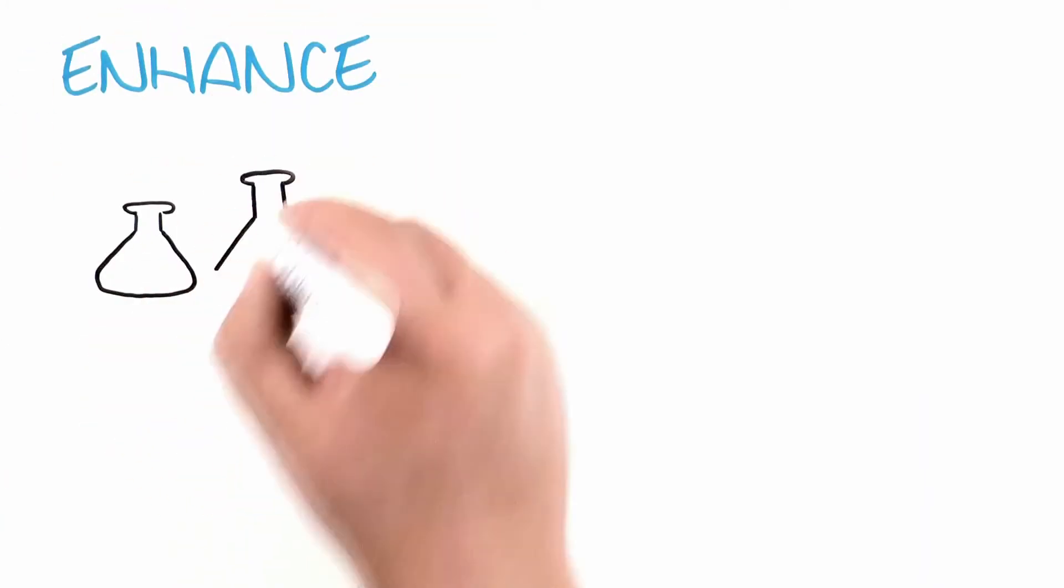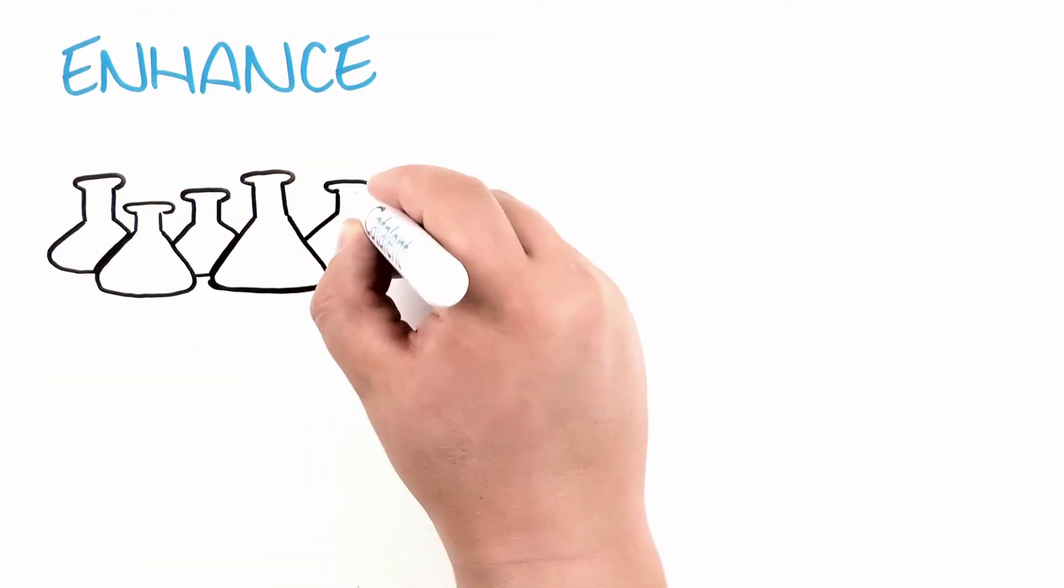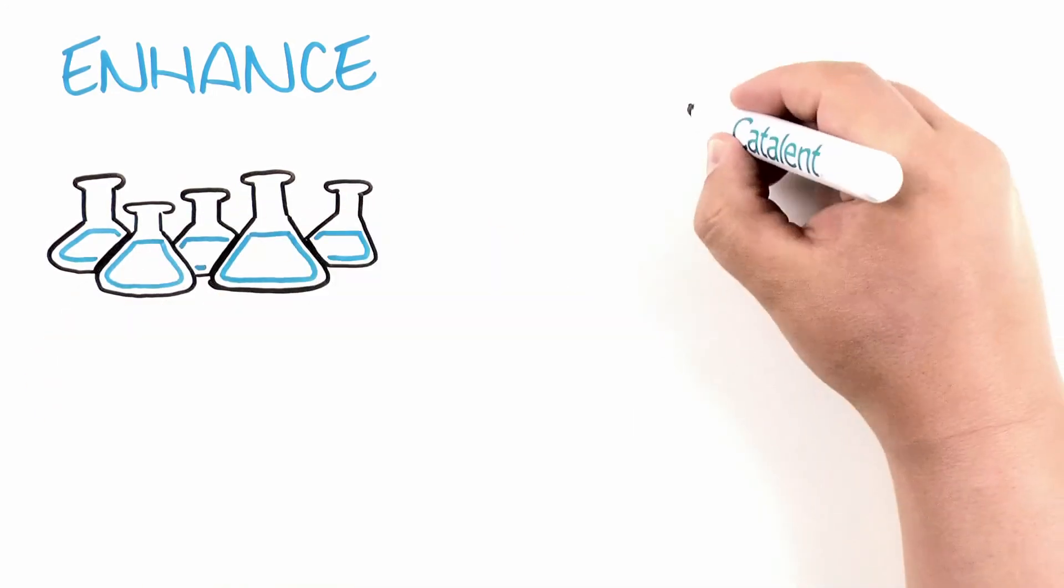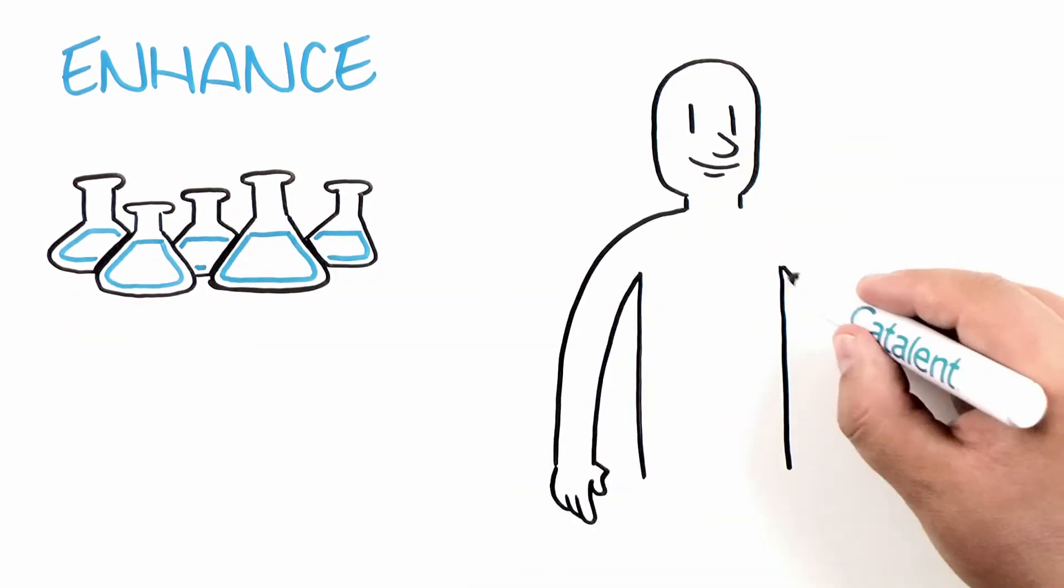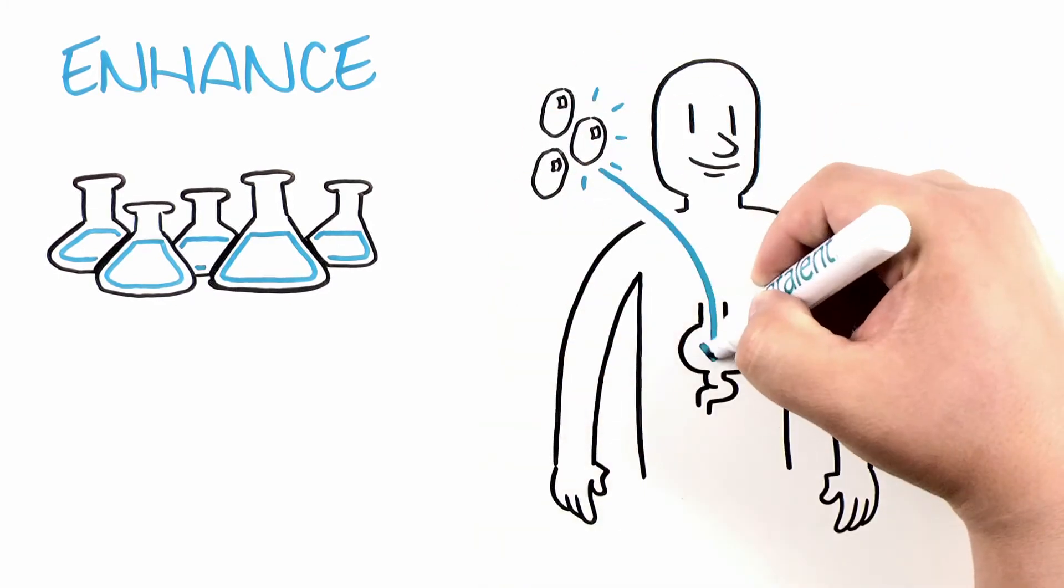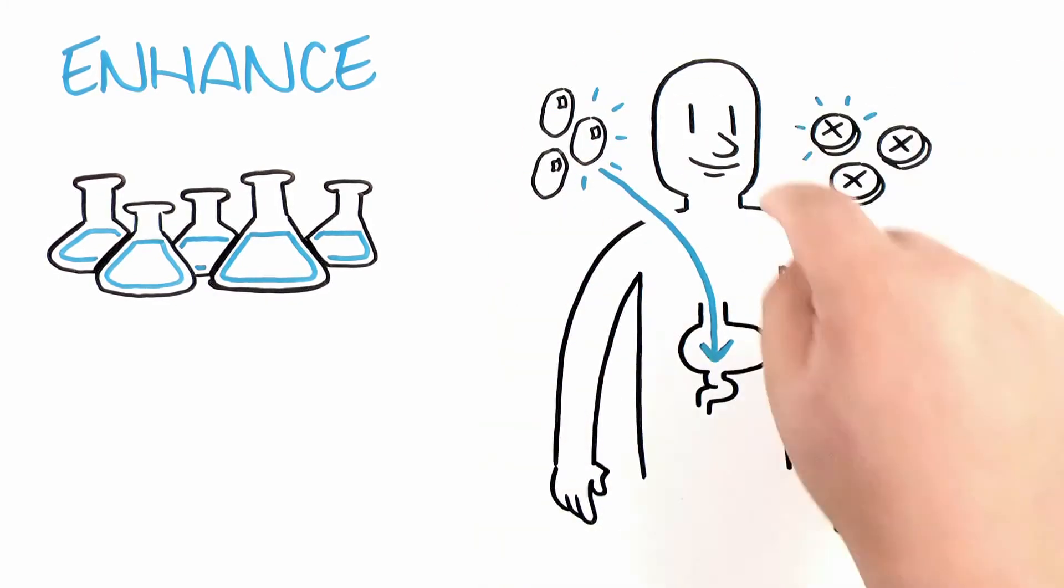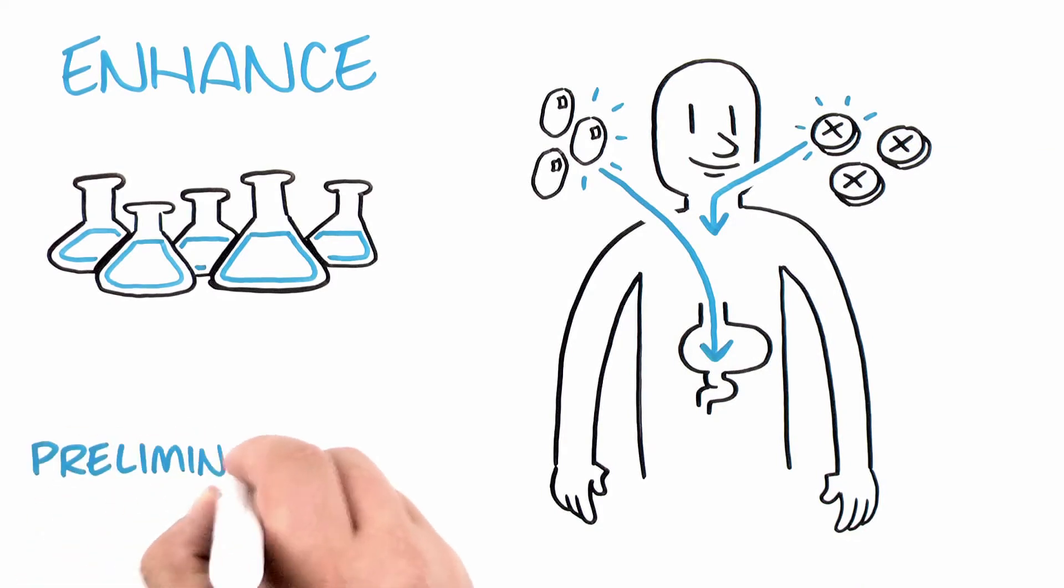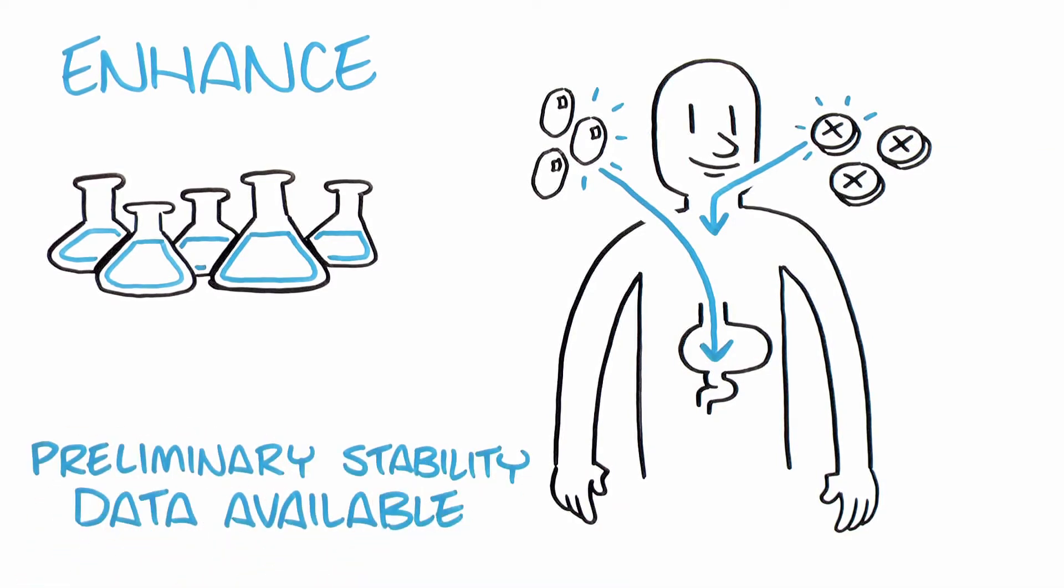Enhance: Using OptiGel Bio and Zydis Bio technologies, candidate formulations are screened in in vivo models against both barriers, leveraging Catalent's extensive formulation library to reproduce exposure with surrogate systems in the assess phase. Preliminary stability data is collected in this step.